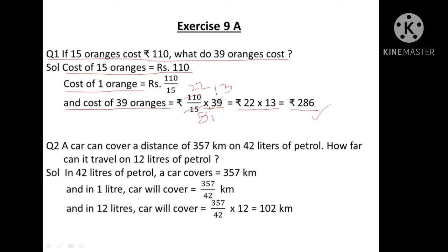We will move to question number 2. A car can cover a distance of 357 kilometers on 42 liters of petrol. How far can it travel on 12 liters of petrol? This is again direct variation. In 42 liters, a car covers 357 kilometers. In 1 liter, it covers 357 divided by 42 kilometers. In 12 liters, it covers 357 divided by 42, multiplied by 12, which gives 102 kilometers.